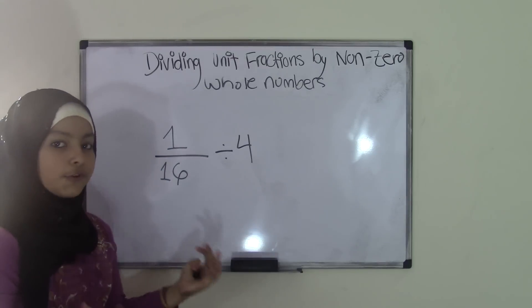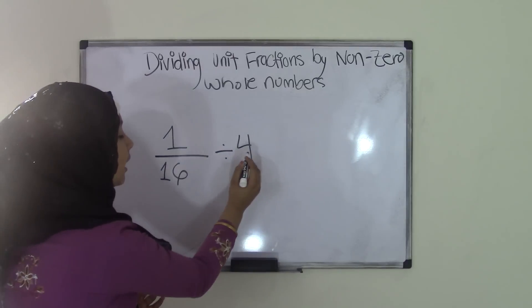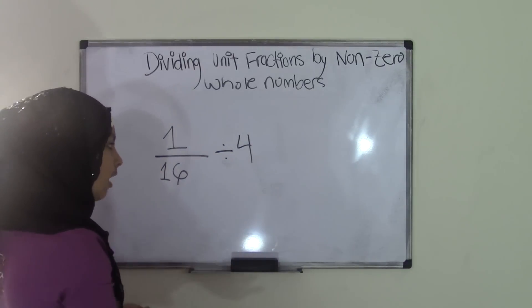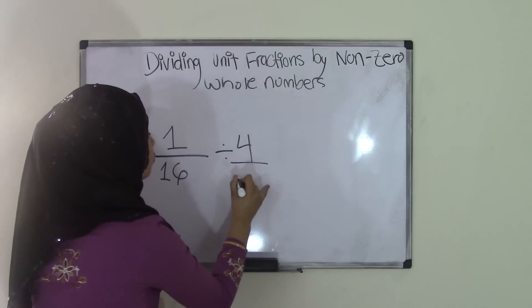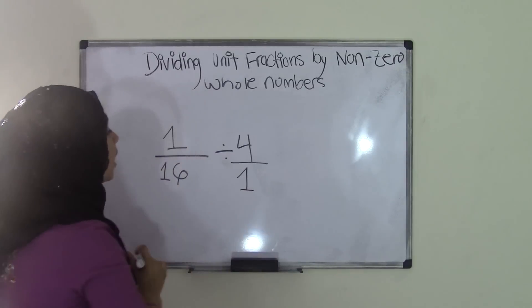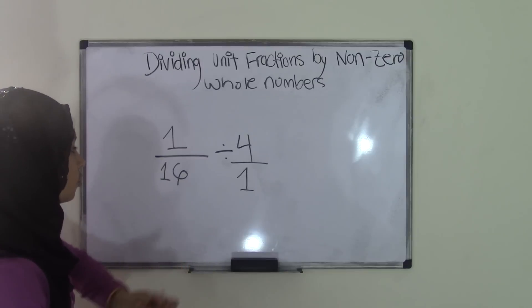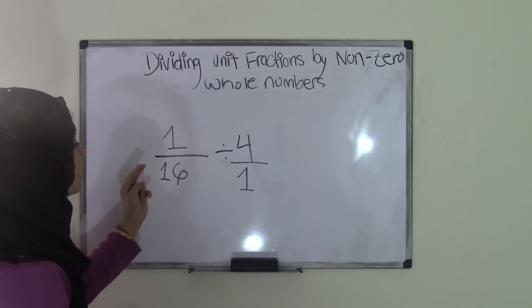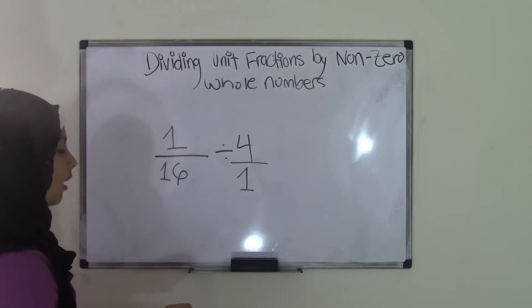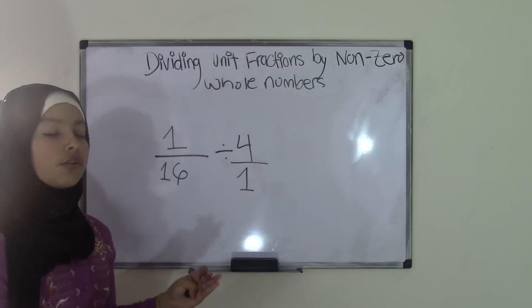Well, it's really simple. First, what you have to do is you take your divisor, which is your whole number, and since it doesn't have a denominator, you're going to put a 1 underneath it. Now, in division of fractions, you don't do like direct division, like 1 divided by 4 or 16 divided by 1. That is wrong. What you're going to do is you're going to use the reciprocal method.